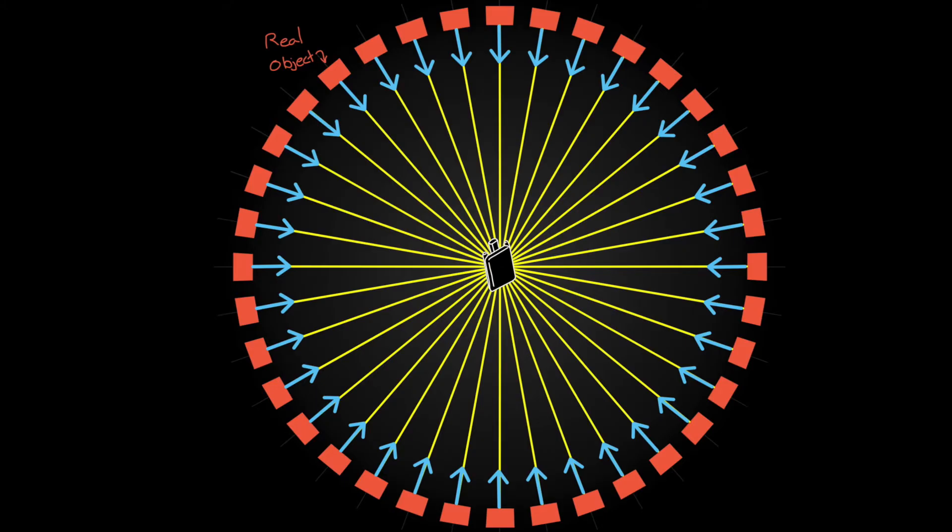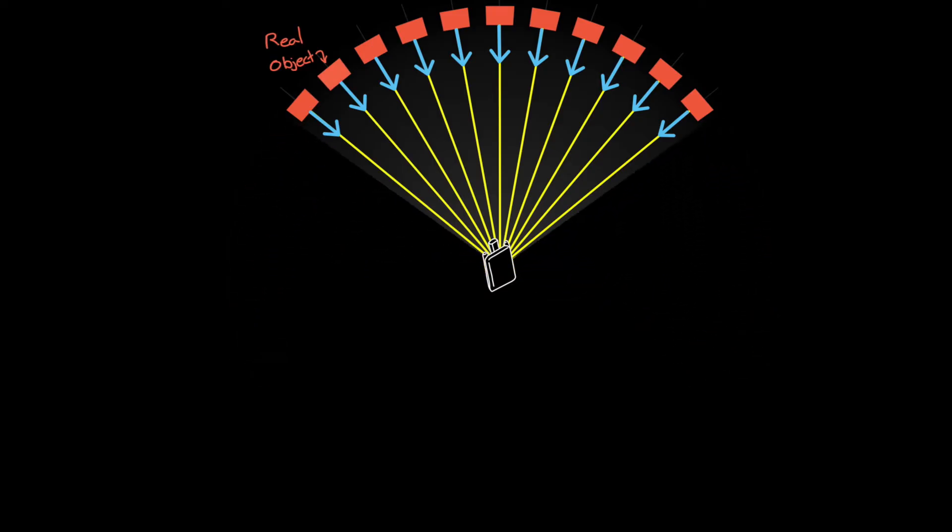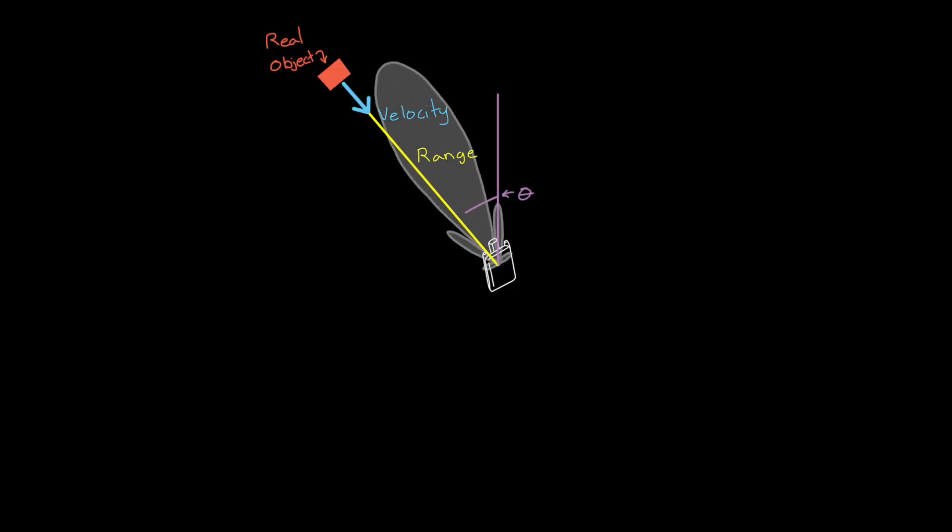Now, to reduce the region where the object could be, we need to change the antenna. Instead of transmitting with an isotropic antenna, we can use an antenna that forms a more narrow beam. If the radar doesn't sense a detection, then we know that there isn't an object in the direction of the beam. And we could scan through the environment and note the direction the beam is facing when a detection is made.